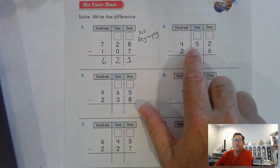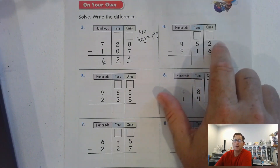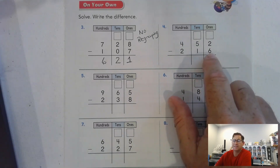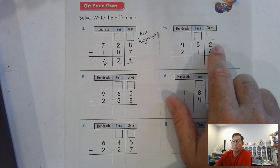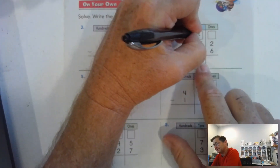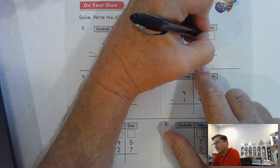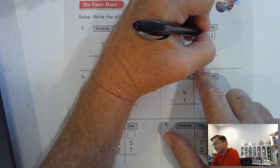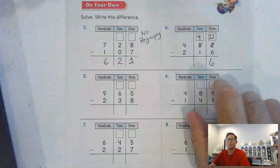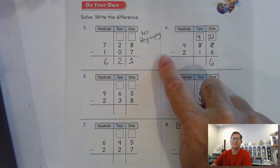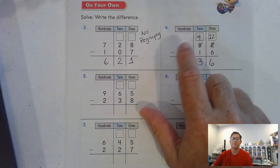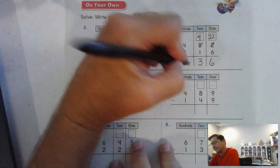Number 4: 452 minus 216. Here we have 2 ones, and we have to take away 6 ones — can't do that, 6 is not less than 2. So we're going to need to get more ones. We'll trade 1 of the 5 tens for 10 ones. Now we have enough ones. 12 take away 6 ones is 6 ones. 4 tens take away 1 ten — 3 tens. 400 take away 200 leaves 200.